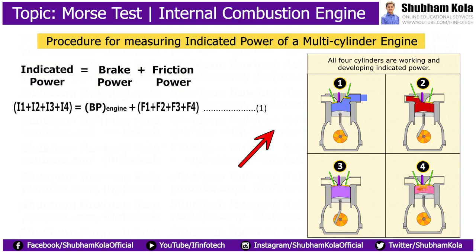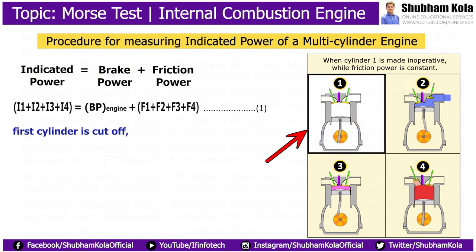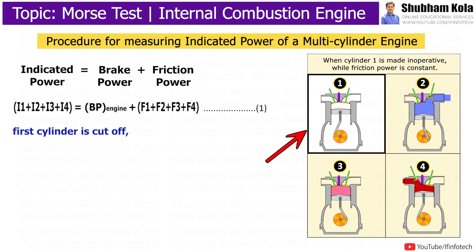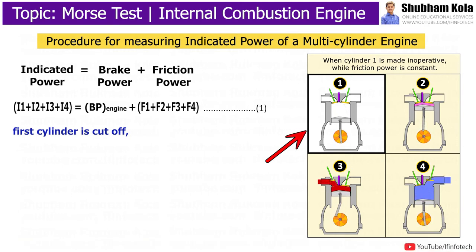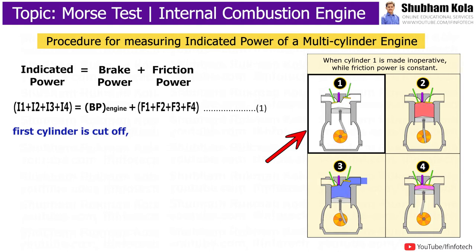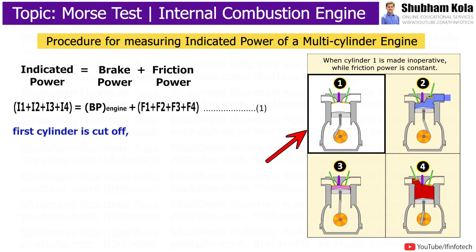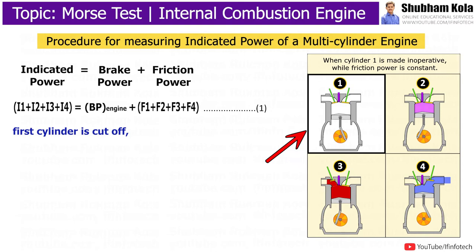The first cylinder is cut off by short-circuiting the spark plug in the case of an SI engine, or by cutting the fuel supply in the case of a CI engine. This causes the speed to drop due to non-firing of the first cylinder. It should be noted that although the first cylinder is not producing power, it is still moving up and down, so its frictional power must be considered.